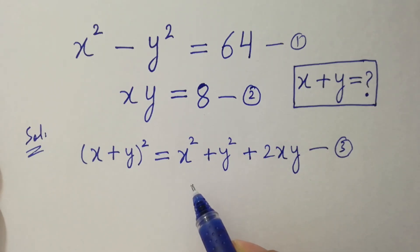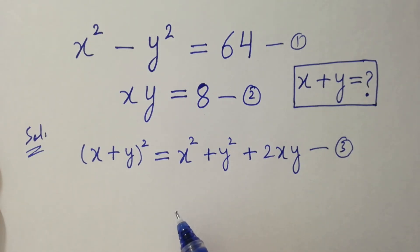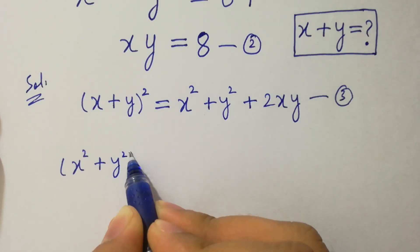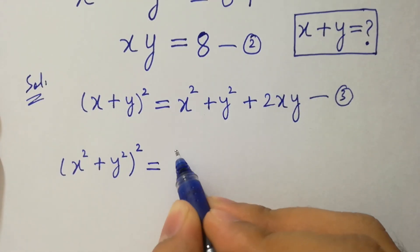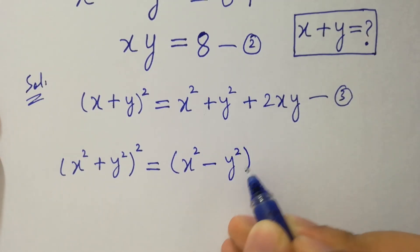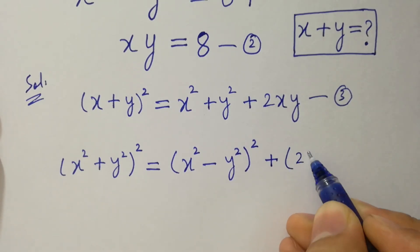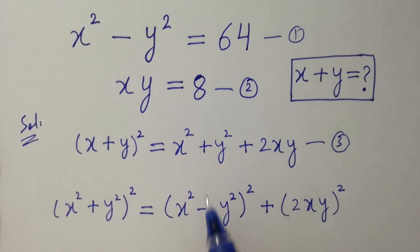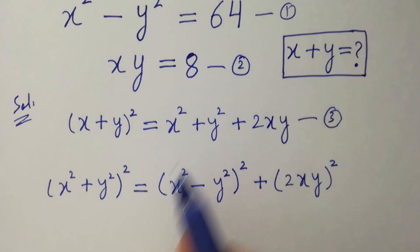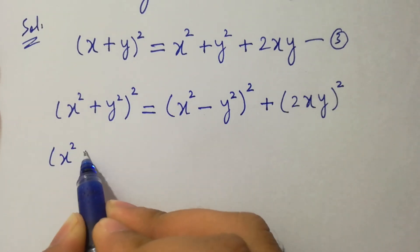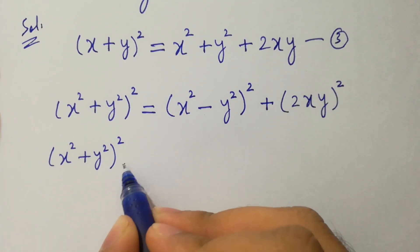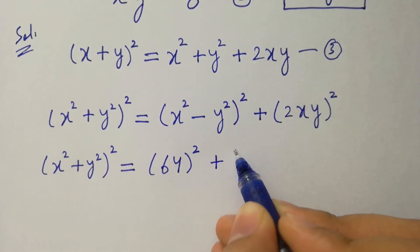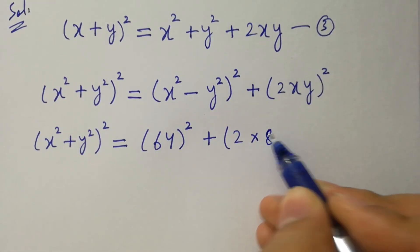We don't yet have the value of x squared plus y squared. To find it, we can use another formula: x squared plus y squared, whole squared, equals x squared minus y squared, whole squared, plus 2xy whole squared. We can put in the value of x squared minus y squared which is 64, and xy which is 8.